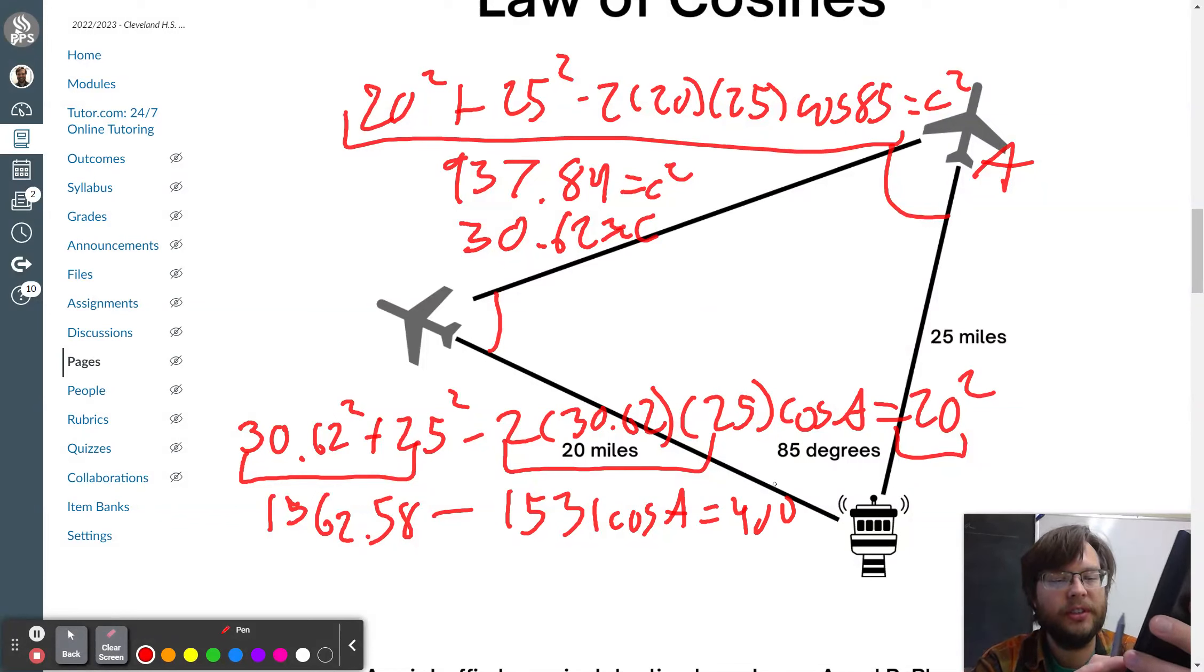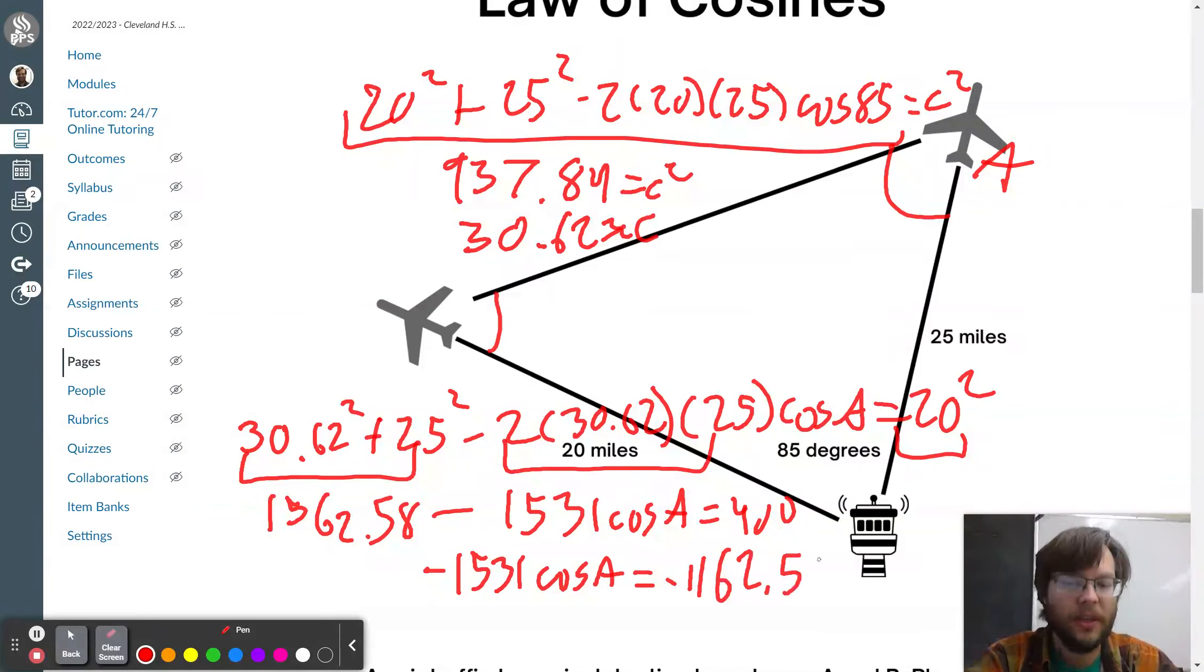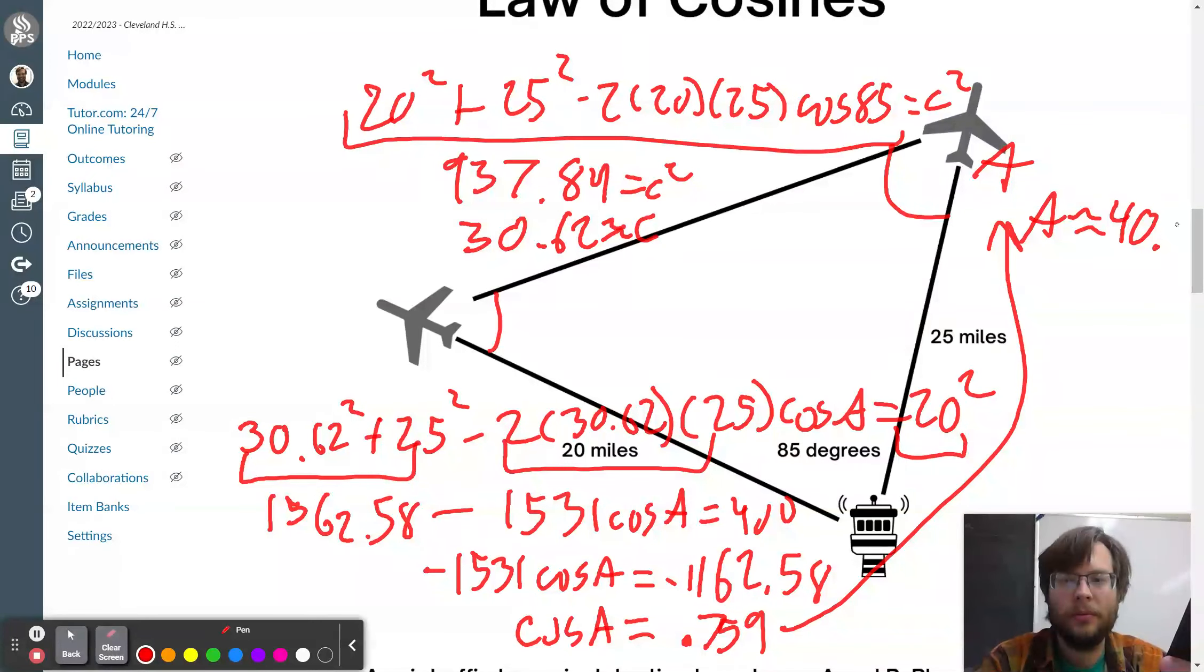2 times 30.62 times 25 is 1531 times cosine A. 20 squared is 400. Now I'm subtracting 1562.58 from 400. So, 400 minus 1562.58. So, I have negative 1531 cosine A equals negative 1162.58 divided by the negative 1531. And so, I have cosine of A is equal to 0.759. So, I take the inverse cosine of that. And I get that A is approximately 40.59 degrees.